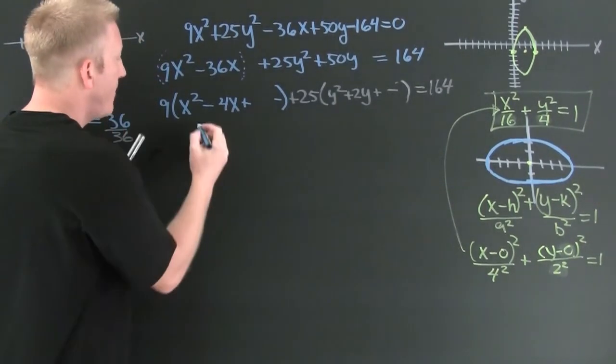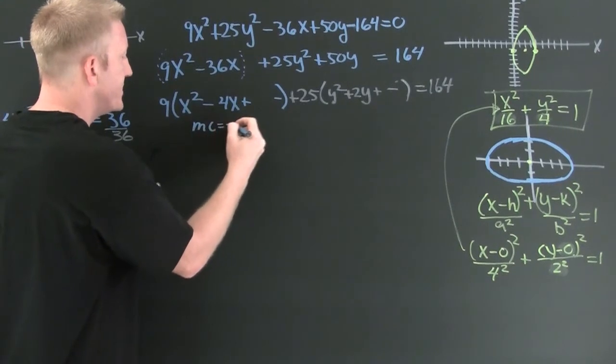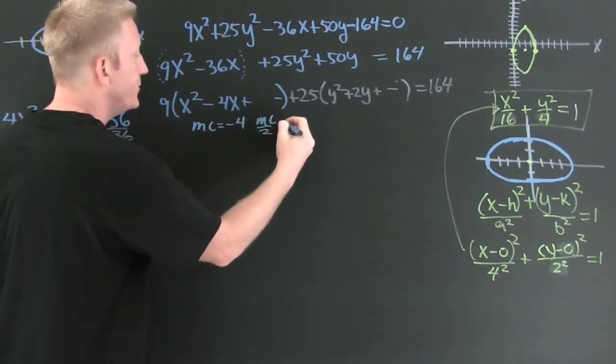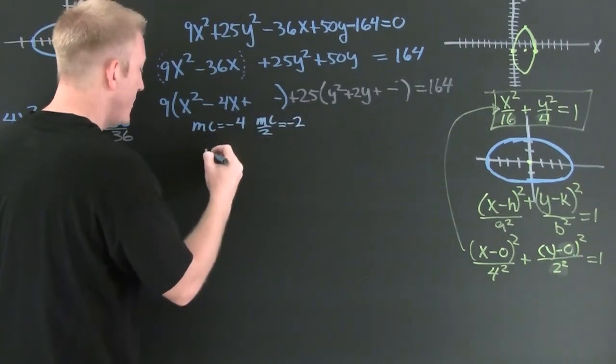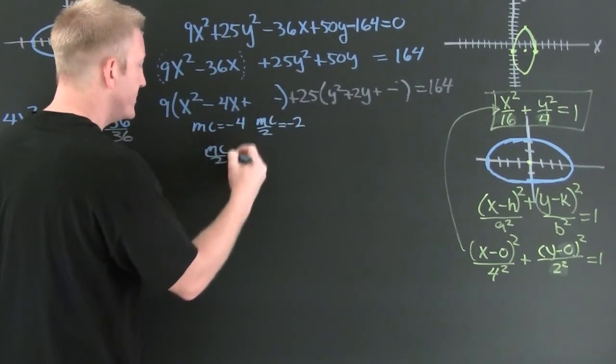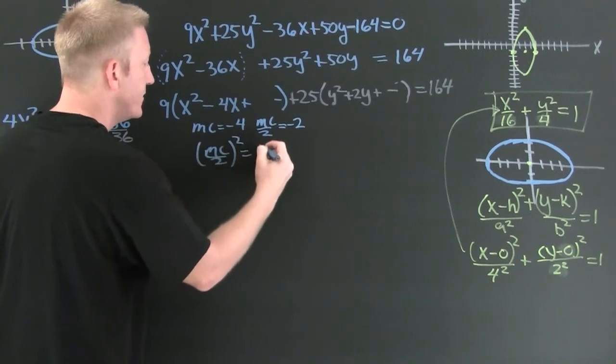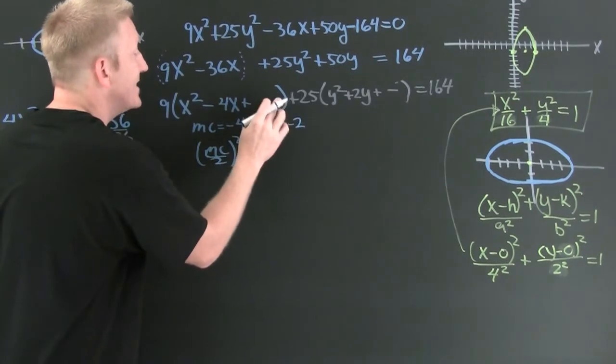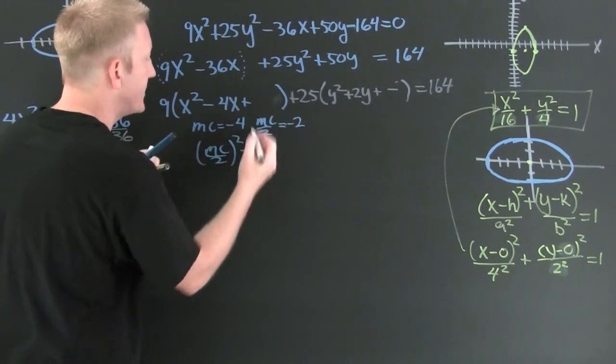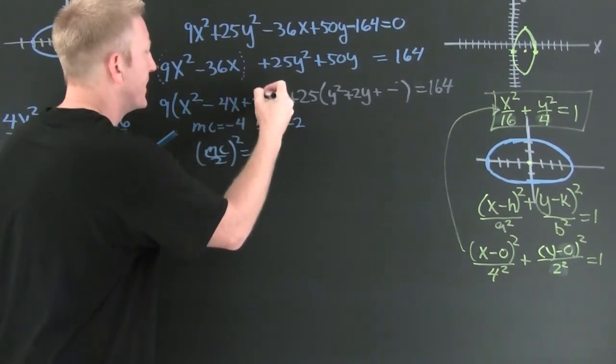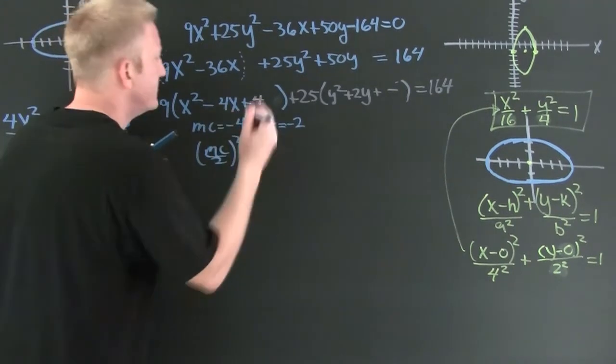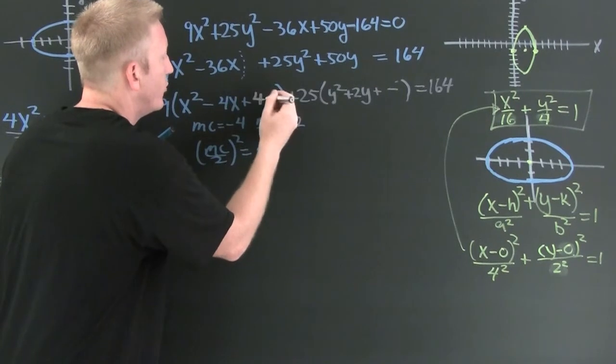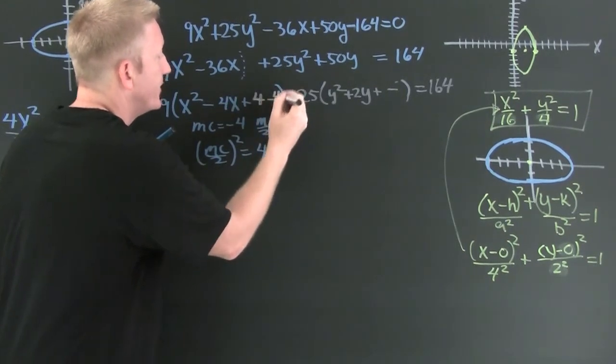But wait there's more. Here my middle coefficient is minus 4. My middle coefficient over 2 is minus 2. My middle coefficient over 2 squared is 4. So I take half the middle coefficient squared and I add it and subtract it. So I add 4. So I add 4. And I subtract 4.